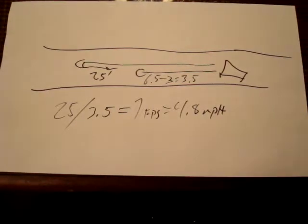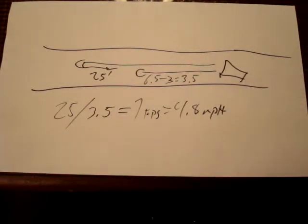An average human being walks about 4 miles an hour. An average jogger jogs about 10 miles an hour.